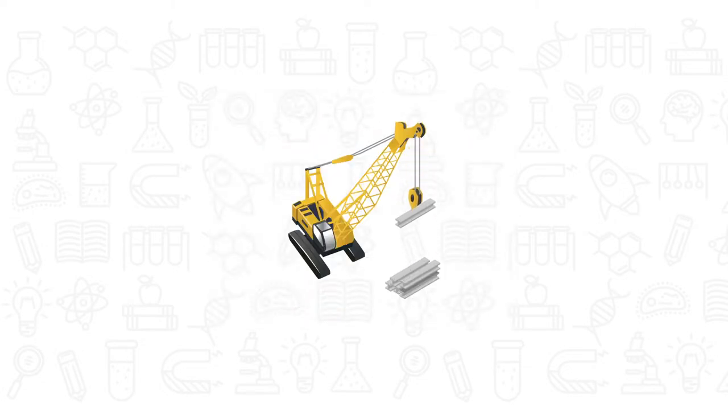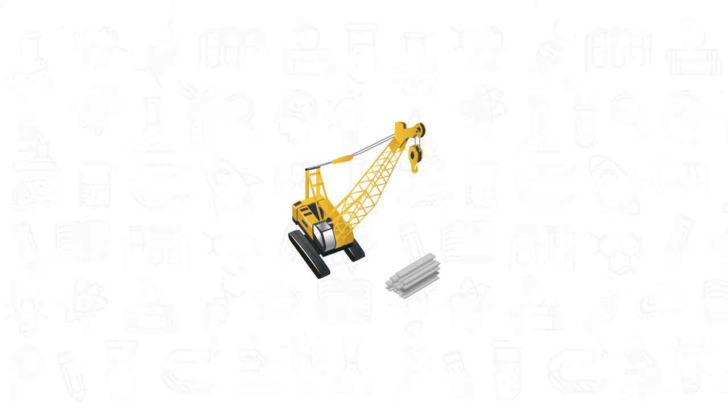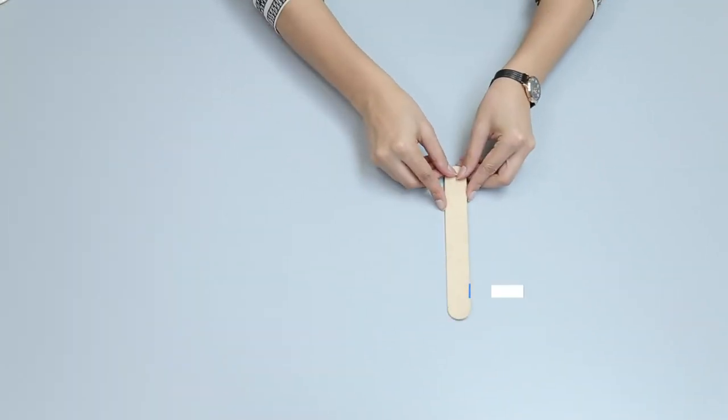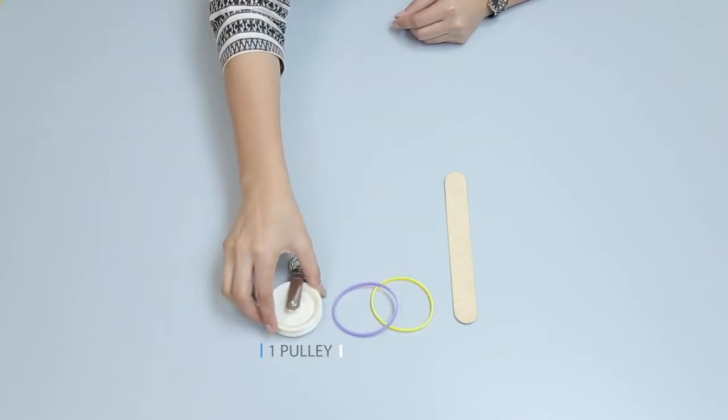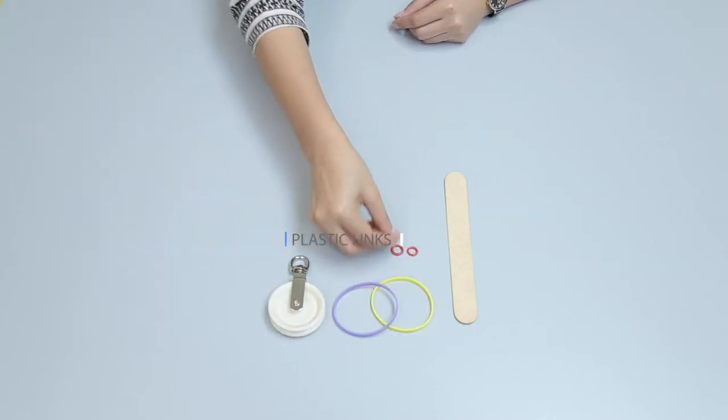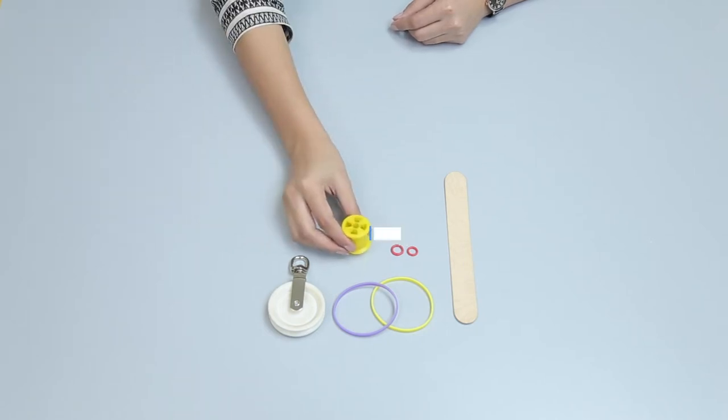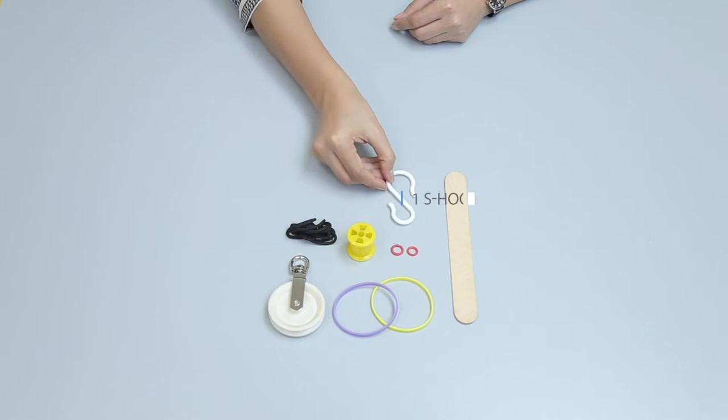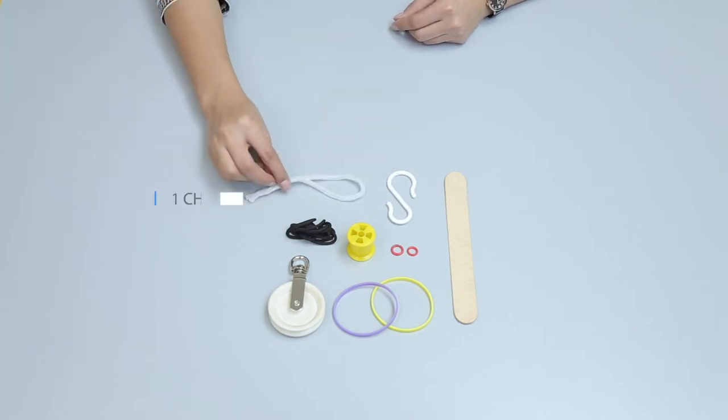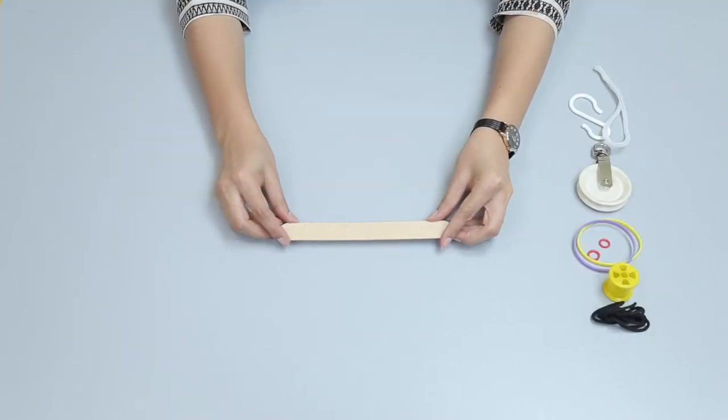For designing a tower crane, we need one craft stick, two rubber bands, one pulley, plastic chain links, one cotton reel, one shoelace, one s-hook, and one chenille stem. Take a craft stick and wind a rubber band tightly around one end of the craft stick.